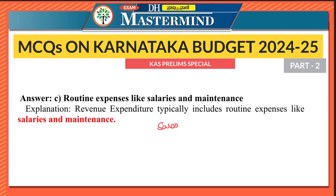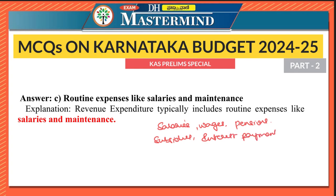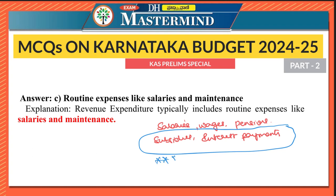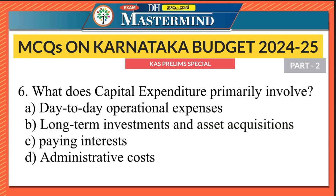Revenue expenditure typically includes routine expenses like salaries and maintenance. Examples of revenue expenditures are: salaries given to government employees, wages, pensions given to retired employees, subsidies given to farmers, and interest payments. Very importantly — subsidies and interest payments come under revenue expenditure, not capital expenditure. Please put five stars for this point.